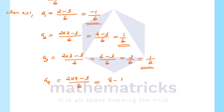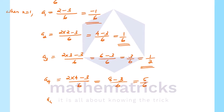When n equals 4, that is (2 into 4 minus 3) by 6, equal to (8 minus 3) by 6, that is 5 divided by 6. Next, a5: 2 into 5 minus 3 by 6, that is equal to (10 minus 3) by 6, equal to 7 by 6. Now the first 5 terms are found.